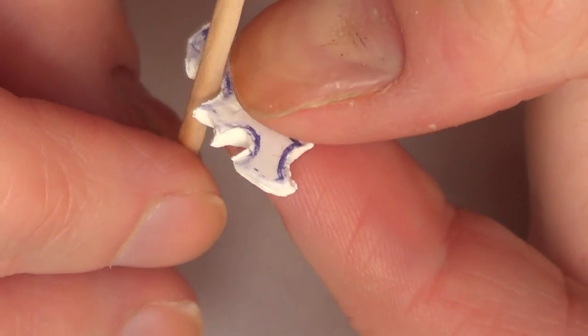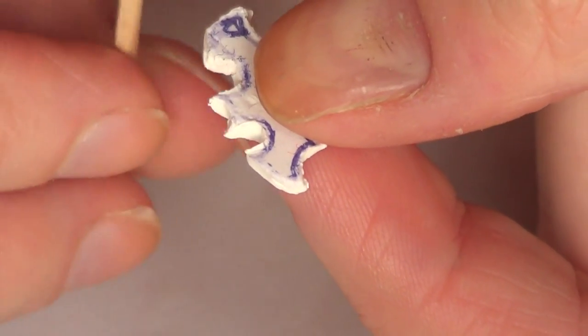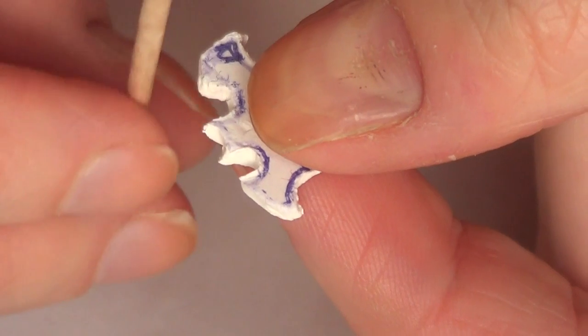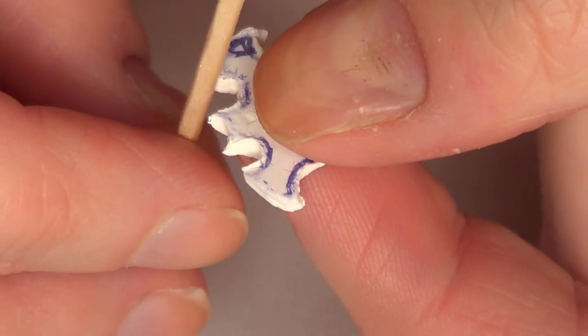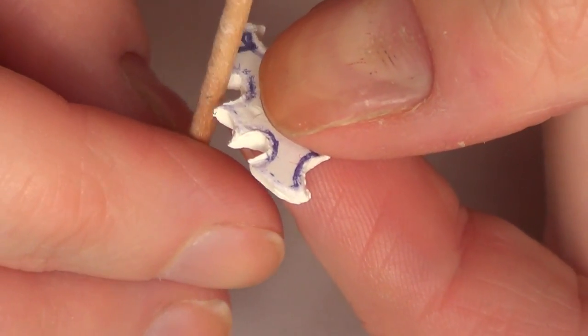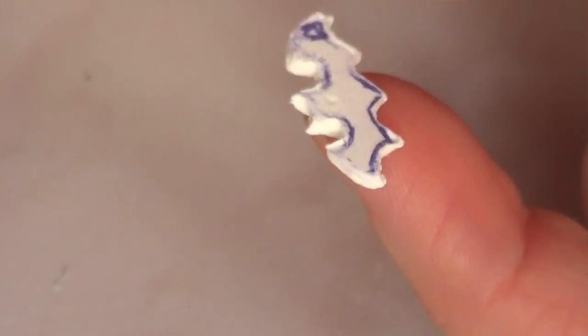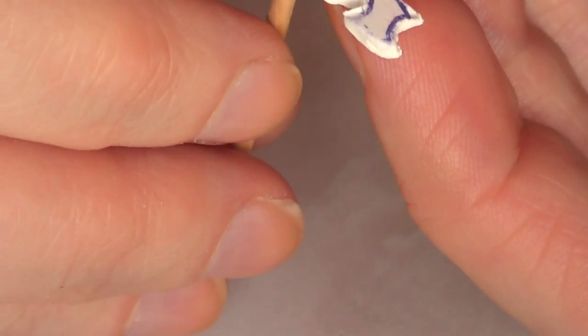Now I'm working with my toothpick to smooth everything before baking. Sorry about my thumbs—they look kind of horrible and super dry, but hopefully that doesn't distract you too much.